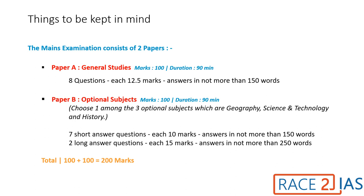Paper B, the Optional Subject, requires candidates to choose one among three subjects — Geography, History, or Science and Technology — as their optional subject. It contains two types of questions: short answer questions and long answer questions. The seven short answer questions carry 10 marks each, to be answered in not more than 150 words, and the two long answer questions carry 15 marks each, to be answered in not more than 250 words.